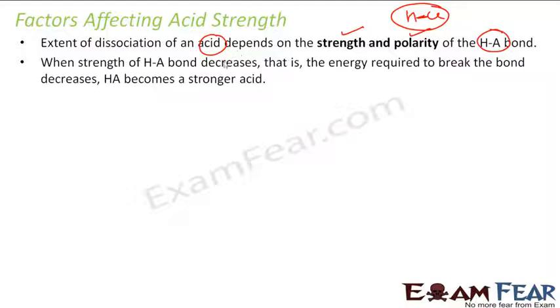If the strength is weak, then less energy is required to break it and the acid becomes a strong acid. In HCl, the strength of this H-Cl bond is weak, so it breaks easily into H+ and Cl-, making it a strong acid.